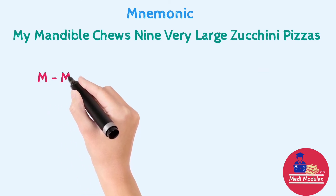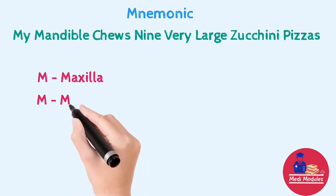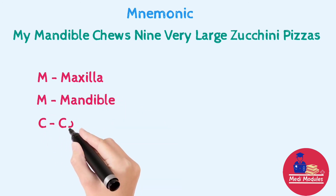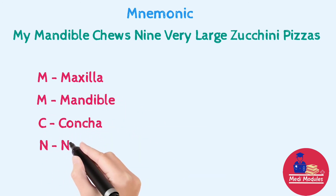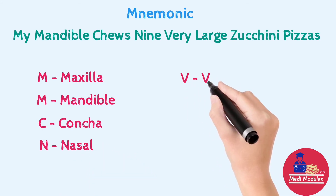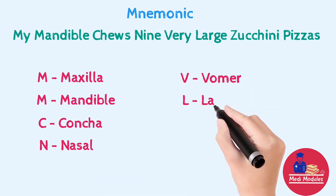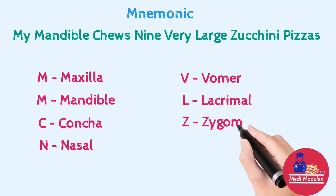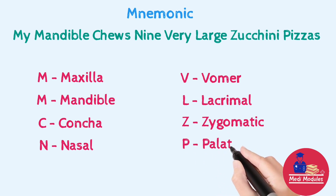Please take the first letter of each word. Here M stands for maxilla, another M is mandible, C stands for concha or inferior nasal concha, N stands for nasal, V stands for vomer, L stands for lacrimal, Z stands for zygomatic, and P stands for palatine.